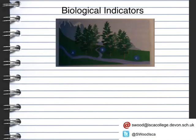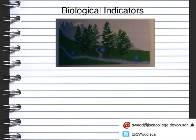Looking at this diagram, we can see that site C is polluted. At site A there are two factories or two communities where the pollution may be coming from. To decide whether it comes from A or B, we can look at the biological indicators at the two locations. The results show that site A has high numbers of mayfly larvae and stonefly larvae compared to site B, so the water at site A is going to have a high oxygen content and therefore be less polluted. Confirming this, at site B we've got virtually zero bloodworms with just one rat-tail maggot, whereas site B has a high number of bloodworms and a higher number of rat-tail maggots. This tells us the pollution at site C is coming from site B.